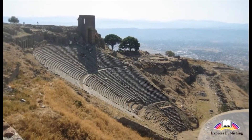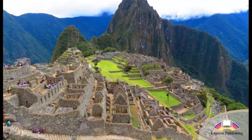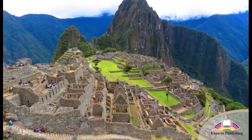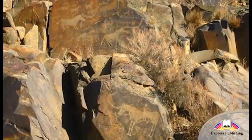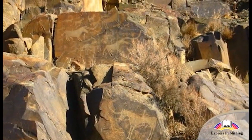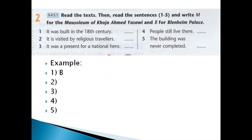Do you know of any other UNESCO World Heritage sites in your country? What makes these places so special? Now read the text again. Then read the sentences from 1 to 5, and write M for the Mausoleum of Korja Ahmed Yasawi, and B for Blenheim Palace.